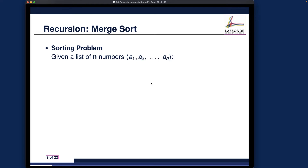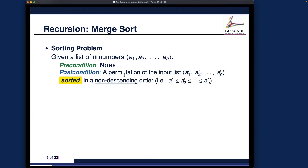The precondition for the input is essentially none — you can be given an arbitrary list that may or may not be sorted. The postcondition is that we want a permutation of the input, meaning no values are lost, but the elements are rearranged in non-descending order. If you have any doubts about what non-descending means, refer to the earlier lecture on selection sort and insertion sort where we introduced that terminology. These precondition and postcondition concepts are important for algorithm design.